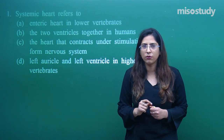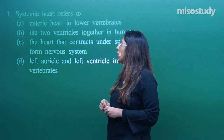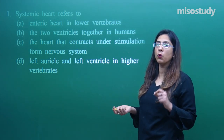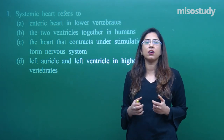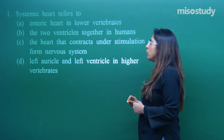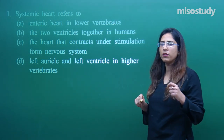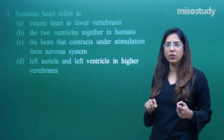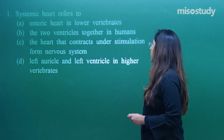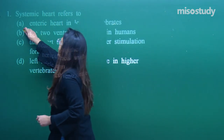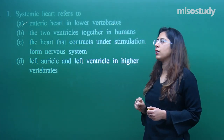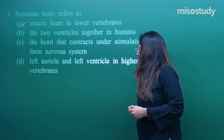If we talk only about systemic circulation or systemic heart, that is present only in lower organisms. Looking at the options: option A — enteric heart present in the lower vertebrates — yes, this is right. The systemic heart is an enteric heart where the heart and various structures are involved. So for question number one, option A is correct.